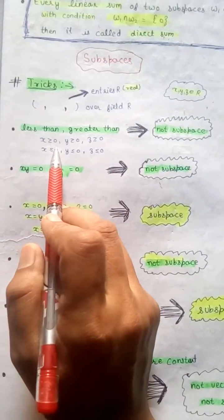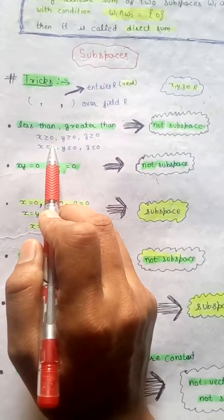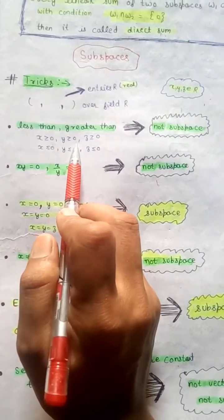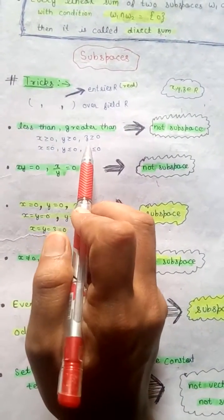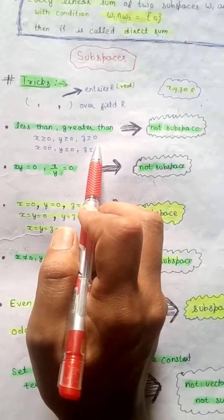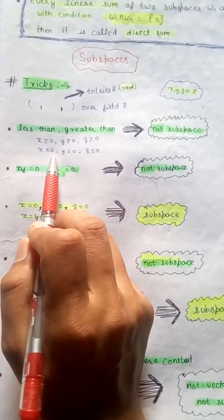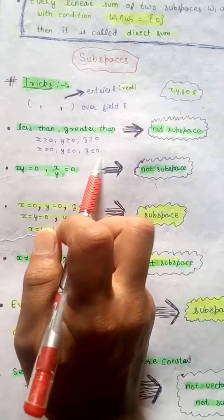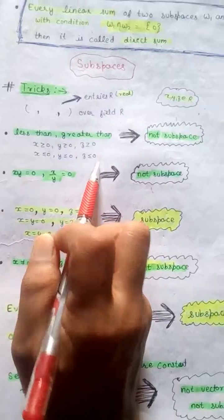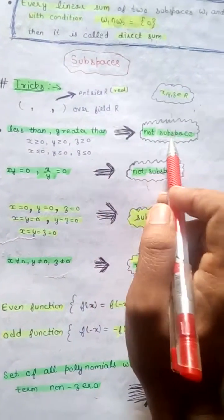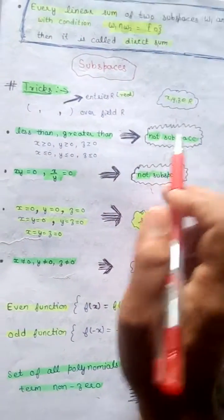If x greater than or equal to 0, y greater than or equal to 0, z greater than or equal to 0, or x less than or equal to 0, y less than or equal to 0, z less than or equal to 0, then these are not subspaces.